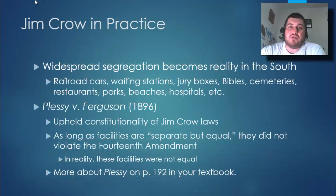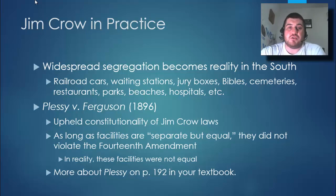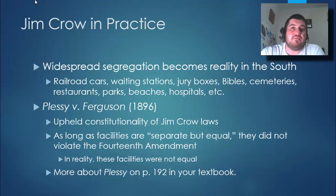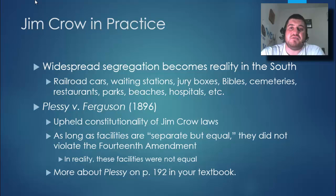Jim Crow in practice in the South meant segregating everything: railroad cars, waiting stations, jury boxes, even black and white Bibles, cemeteries — even when you were dead, they didn't want you buried next to a black person. Restaurants, parks, beaches, hospitals — you name it, it was separated.